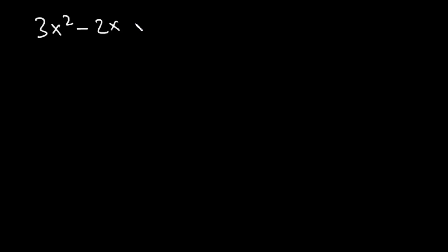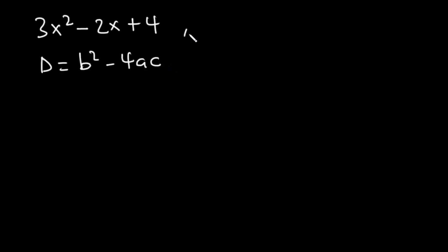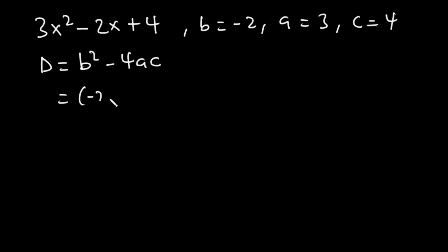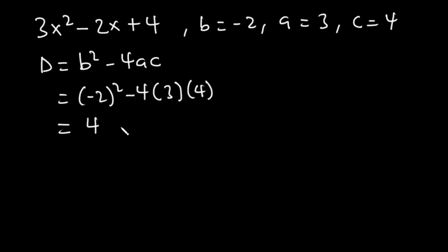Let's take another example: the quadratic equation 3x squared minus 2x plus 4. What is the nature of its roots? Finding the discriminant: D equals b squared minus 4ac, with b equal to negative 2, a equal to 3, and c equal to 4. So D equals negative 2 squared minus 4 times 3 times 4. Negative 2 squared is 4, and 4 times 3 is 12, and 12 times 4 is 48, giving negative 48. So 4 minus 48 equals negative 44.